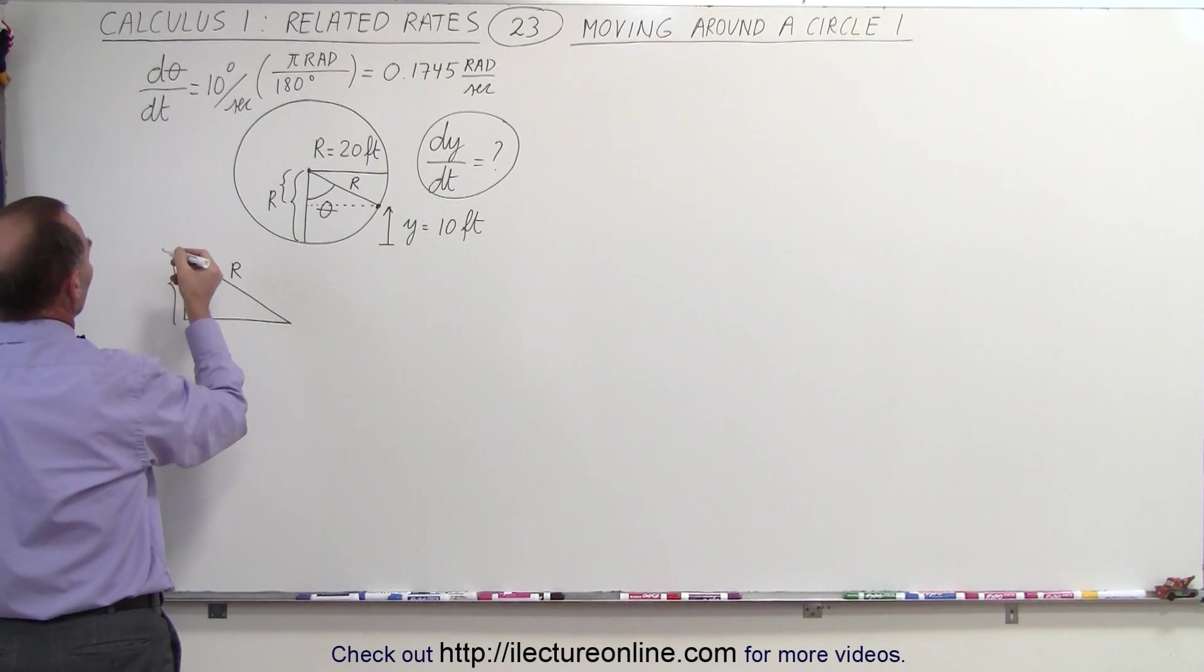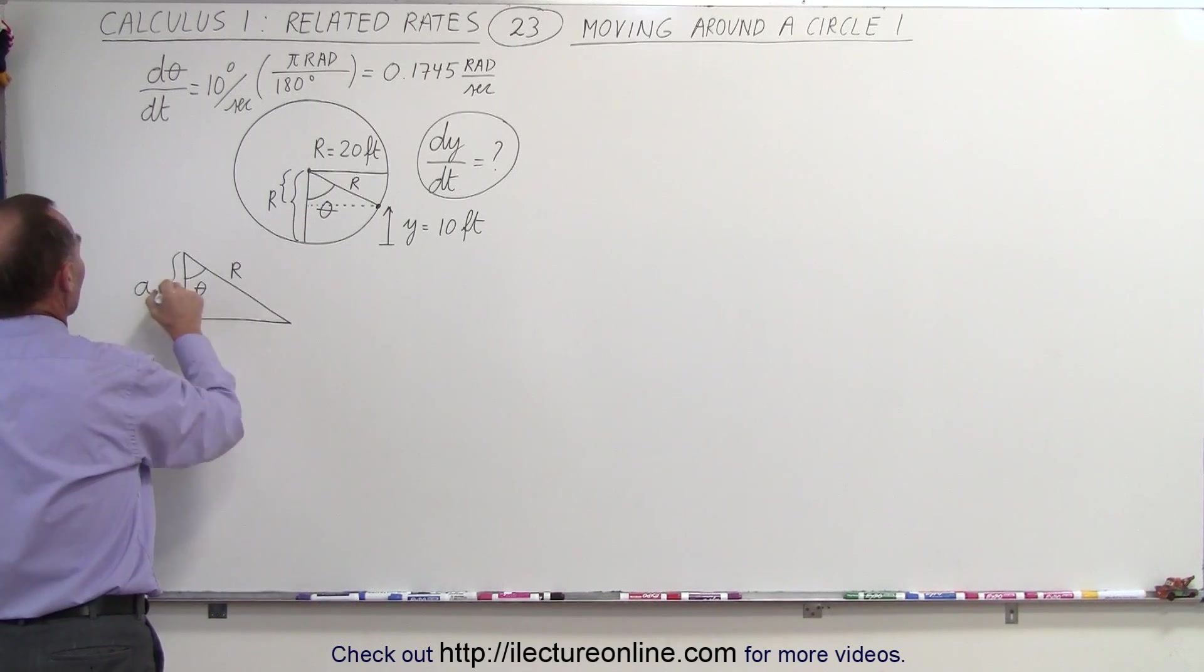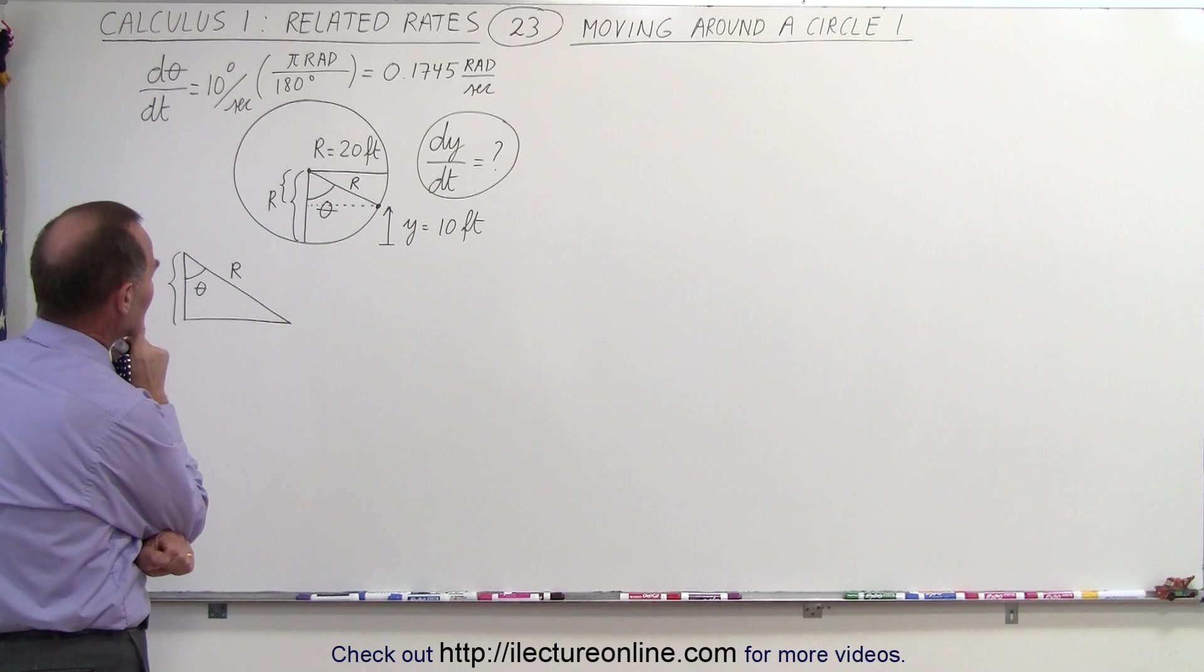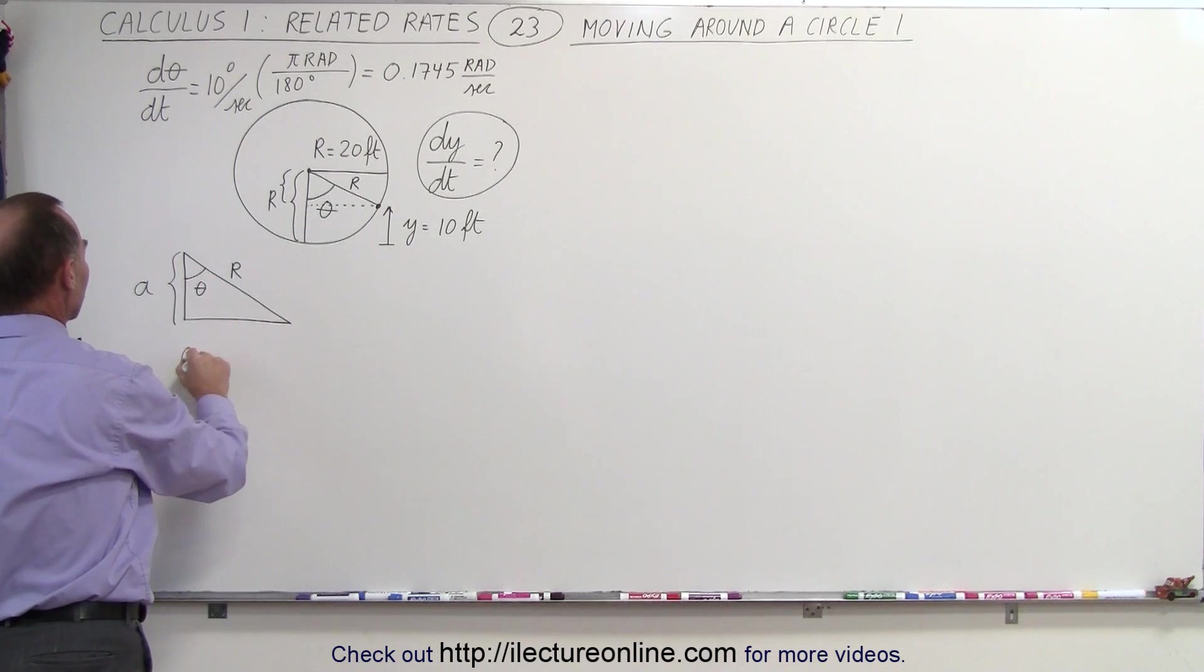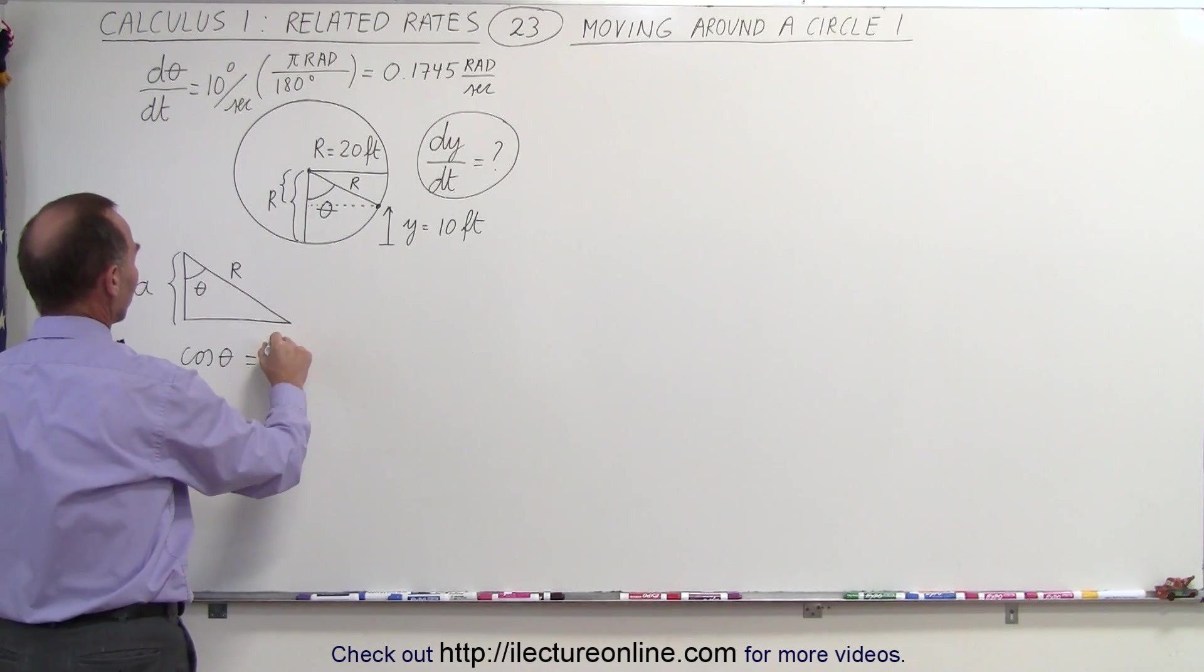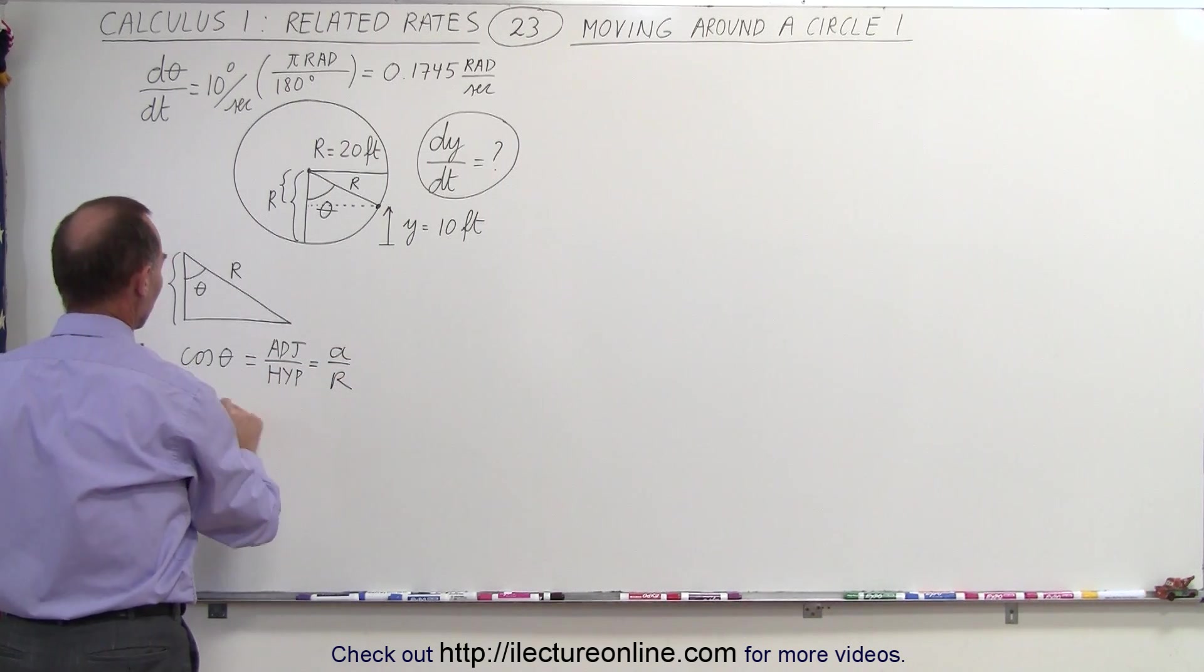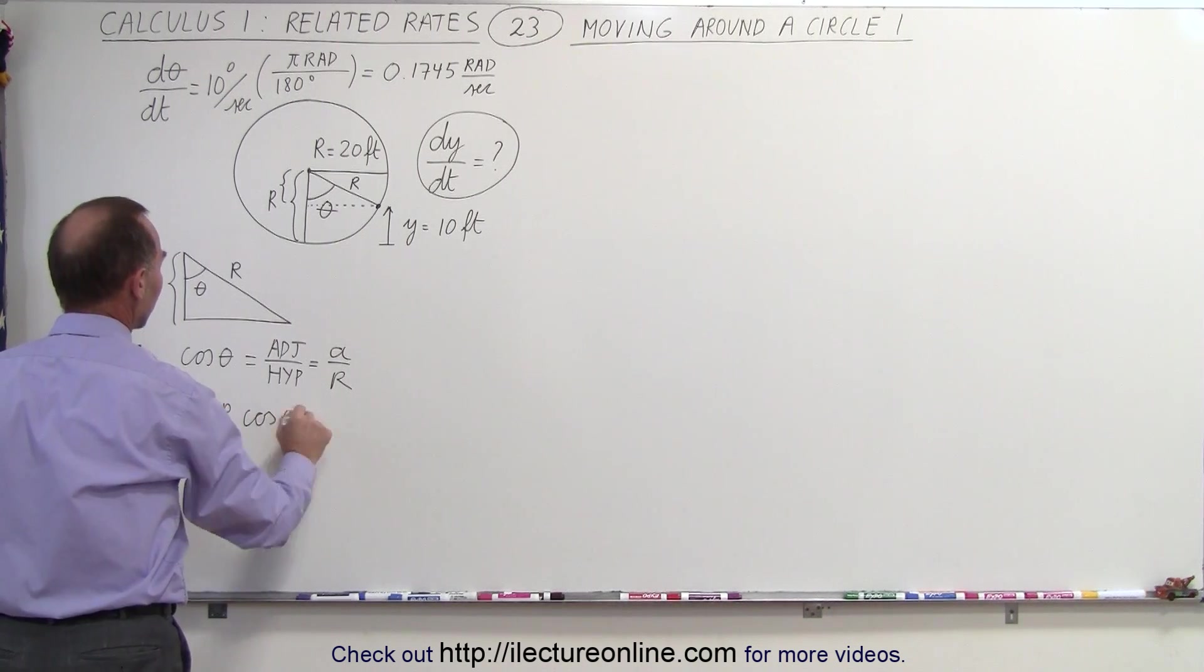We're trying to find the adjacent side. Let's call this y prime. No, y prime would not be a good one. Let's just call it a. That might be easiest. So a is this distance right there. Now we can relate that because that's the adjacent side. We know that the cosine of the angle theta by definition is the ratio of the adjacent side to the hypotenuse, which in this case would be a divided by r, which means that a equals r times the cosine of theta.